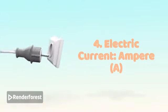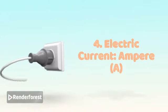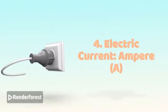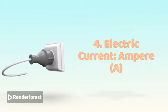Electric current. The SI unit is ampere, A. It measures the flow of electricity through a wire, essential for understanding circuits and appliances.